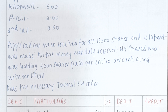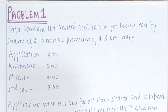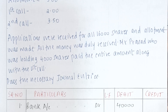Applications were received for 16,000 shares and allotment was made. All the money was duly received. Mr. Prasad, who was holding 4,000 shares, paid the entire amount along with the first call. Pass the necessary journal entries. In this problem we can see that first of all there is premium, so we have to record premium in the allotment. Mr. Prasad holding 4,000 shares has paid the entire amount. In the previous problem, when an amount was not paid it was called in arrears; when the entire amount is paid early, it is called in advance.